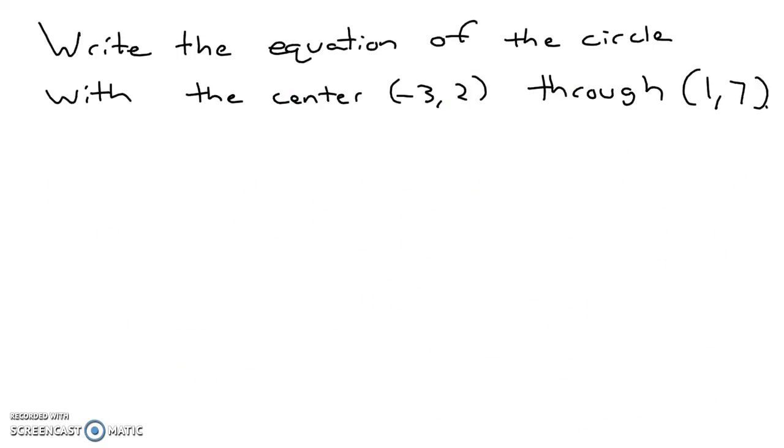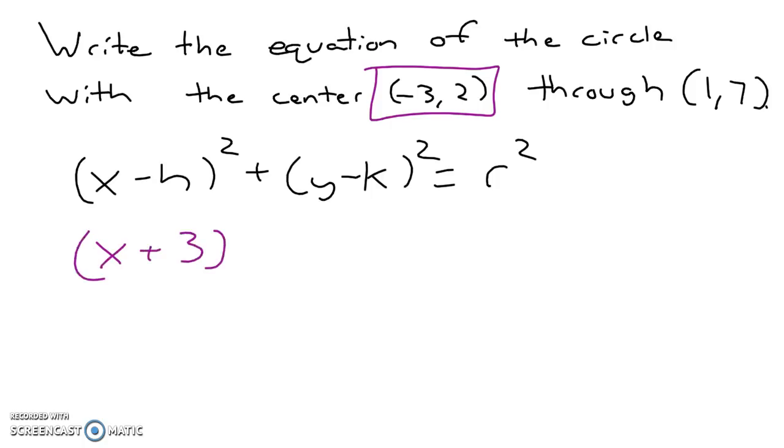Lastly, we're going to write an equation of a circle that has this center and goes through this point. Well, in terms of the equation of a circle, we have x minus h squared plus y minus k squared equals the radius squared. Our radius is the distance from the center to any point. So we have the center, and we have a point that it goes through. Therefore, we can find that distance from the center to that point.